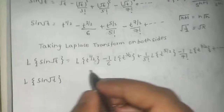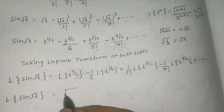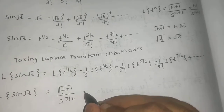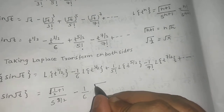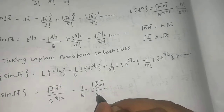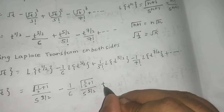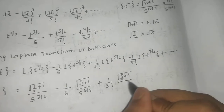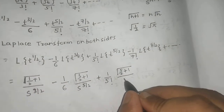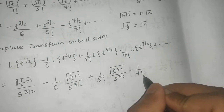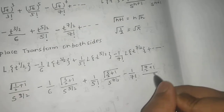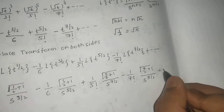So Laplace of t^(1/2) is Γ(1/2 + 1) / s^(3/2). Minus (1/6)·Γ(3/2 + 1) / s^(5/2). Plus (1/5!)·Γ(5/2 + 1) / s^(7/2). Minus (1/7!)·Γ(7/2 + 1) / s^(9/2) and it continues.